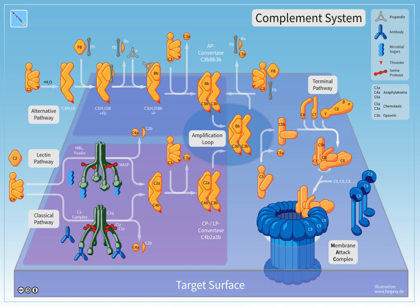Three biochemical pathways activate the complement system: the classical complement pathway, the alternative complement pathway, and the lectin pathway.